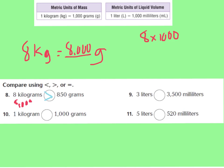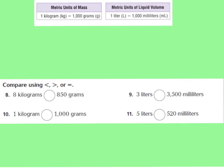For number nine, we want to compare 3 liters to 3,500 milliliters. I know that in 1 liter there are 1,000 milliliters, so I need to change 3 liters to milliliters: 3 times 1,000 equals 3,000. So 3 liters equals 3,000 milliliters. I can see that 3,500 milliliters is greater than 3,000 milliliters, so 3 liters is less than 3,500 milliliters. Now try numbers 10 and 11 on your own and press play when ready.